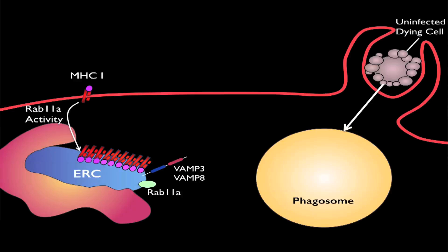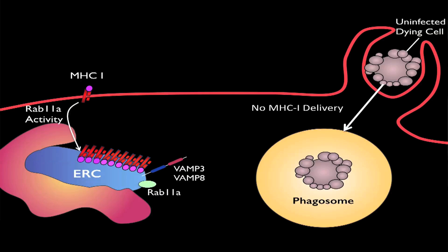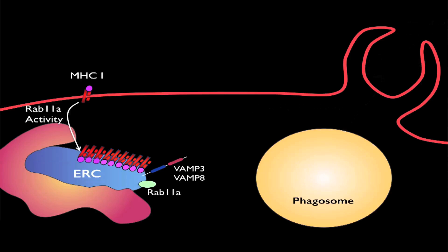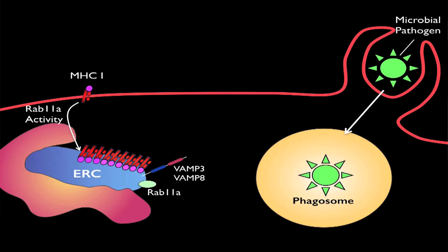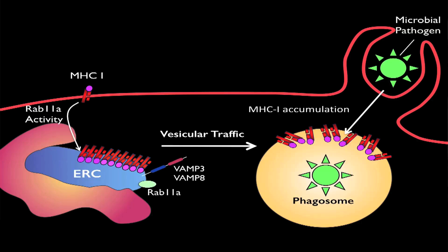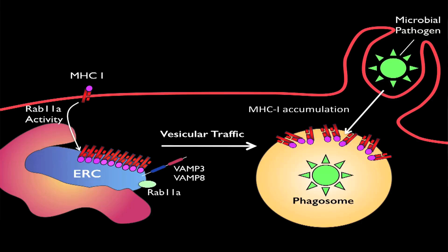When dendritic cells phagocytose cargo like uninfected cells that lack the ligands for toll-like receptors, these ERC-resident MHC class 1 molecules fail to get recruited to the phagosomes. On the other hand, when a microbial pathogen or infected cells are phagocytosed, we start to see these MHC class 1 molecules accumulating on the phagosome, suggesting that a toll-like receptor signal mobilizes these ERC stores of MHC class 1, leading to their accumulation on the phagosome.